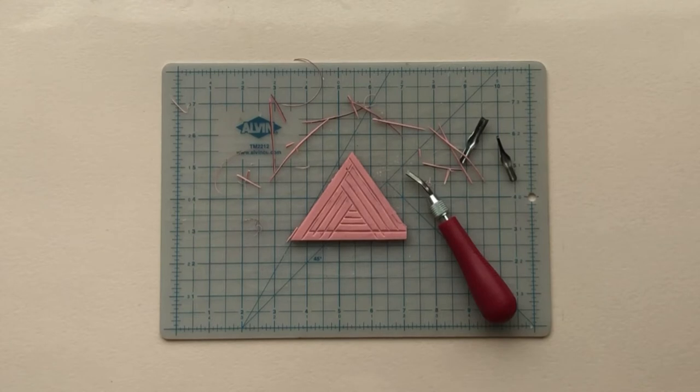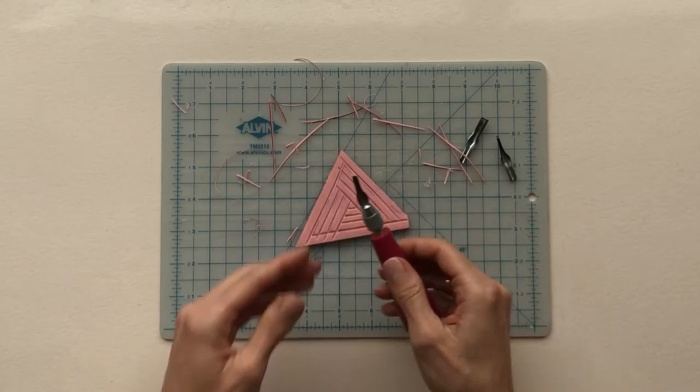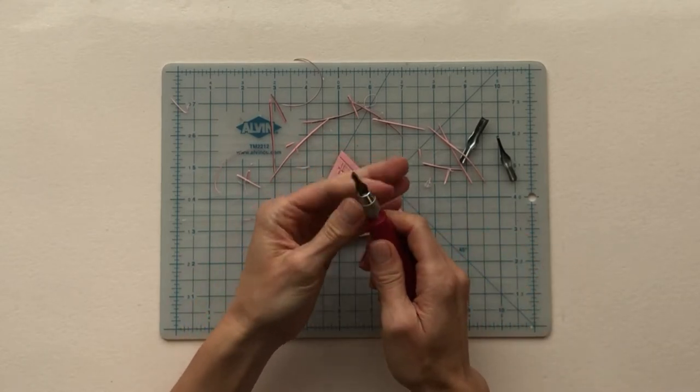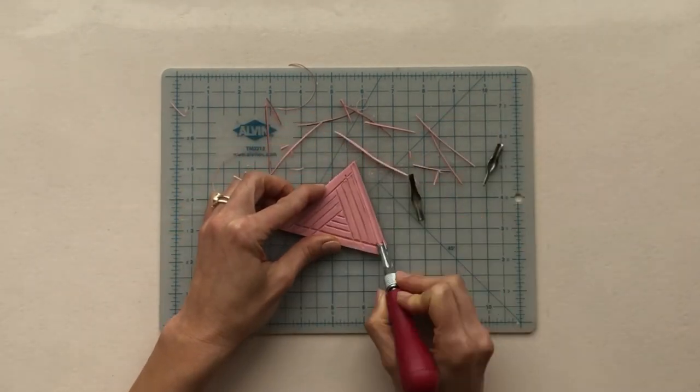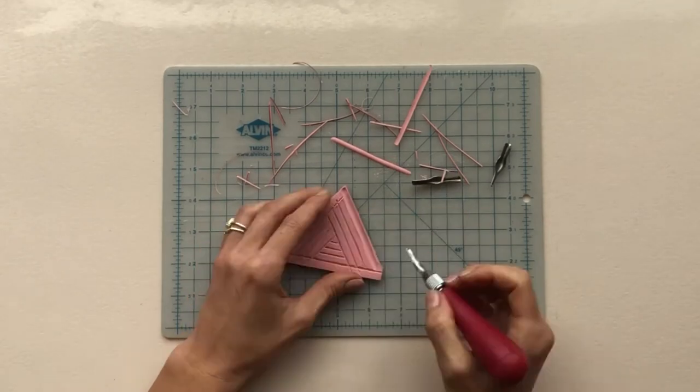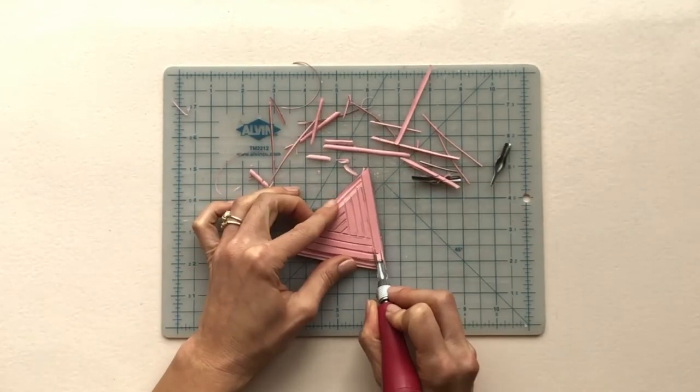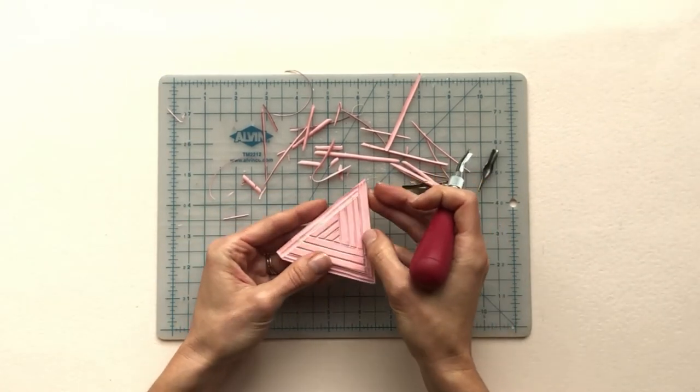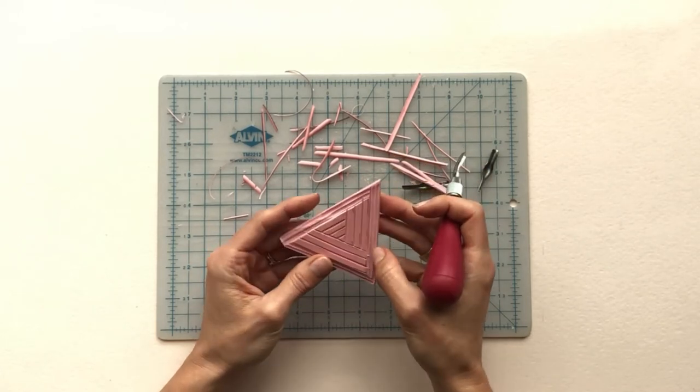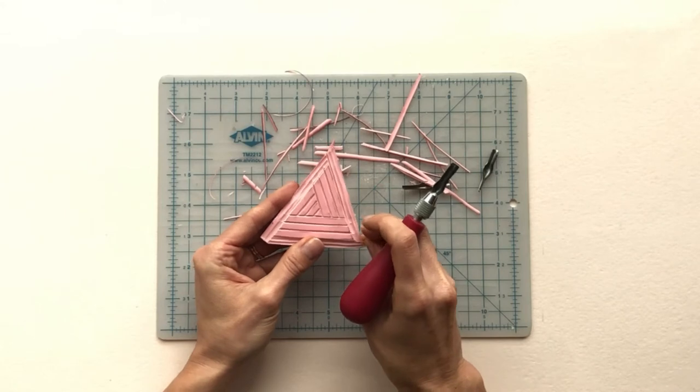So I have most of my design cut out or carved out. So now I'm going to carve away this border with the larger blade. So now I'm just going to go through and kind of cut or carve out some of these ridges to try to get this as smooth as possible so they don't pick up any ink.